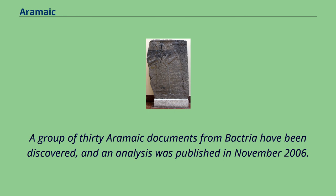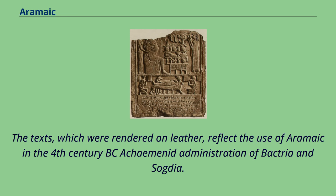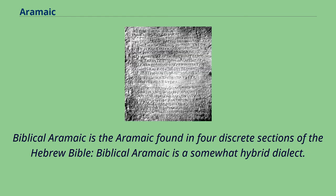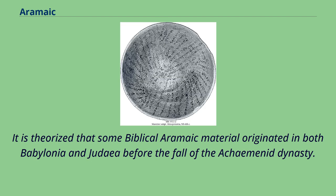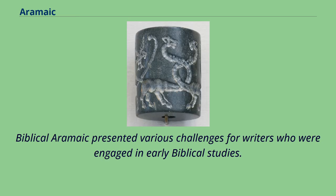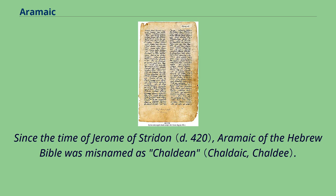Biblical Aramaic is the Aramaic found in four discrete sections of the Hebrew Bible, and is a somewhat hybrid dialect. It is theorized that some Biblical Aramaic material originated in both Babylonia and Judea before the fall of the Achaemenid dynasty. Since the time of Jerome of Striden, Aramaic of the Hebrew Bible was misnamed as Chaldean. That label remained common in early Aramaic studies, persisting into the 19th century, before being abandoned when modern scholarly analyses showed that the Aramaic dialect used in the Hebrew Bible was not related to ancient Chaldeans and their language.